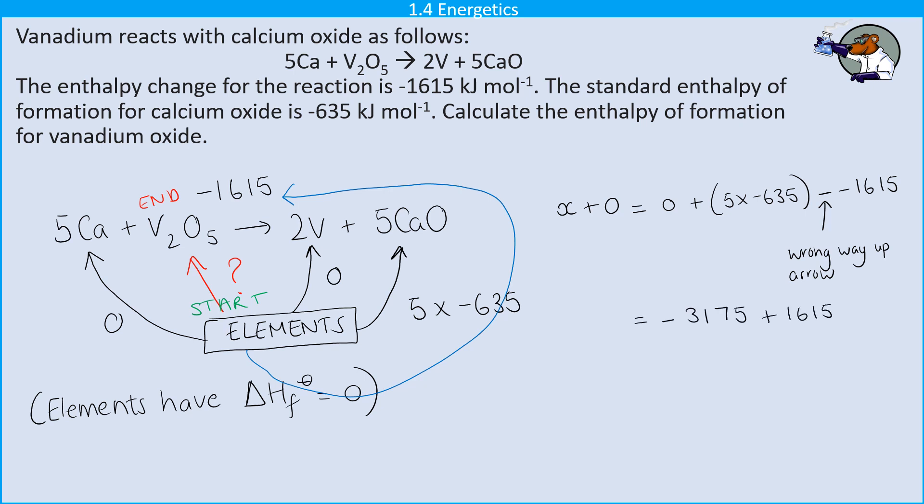So if I then gather together all my terms, I'm going to get X being equal to minus 3175 plus 1615. And that gives me a final answer of minus 1560 kilojoules per mole for three marks.